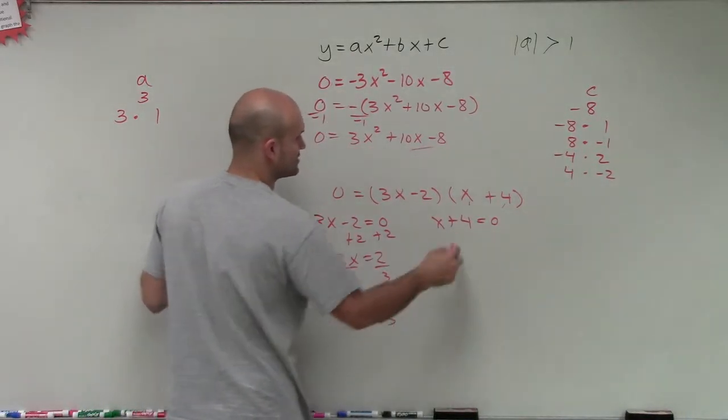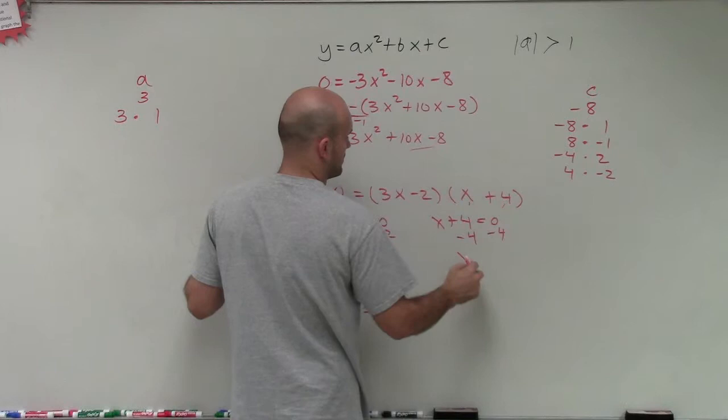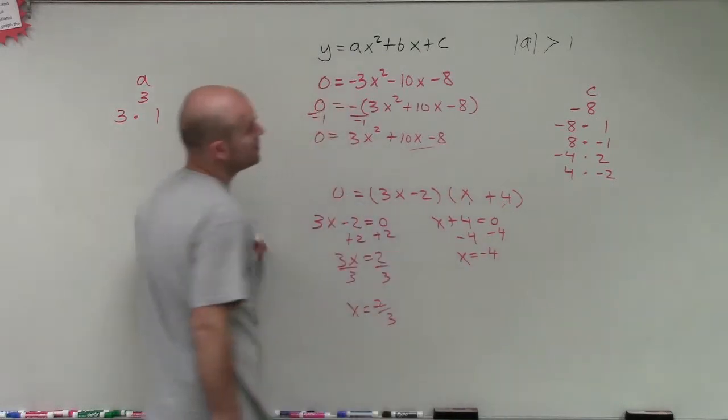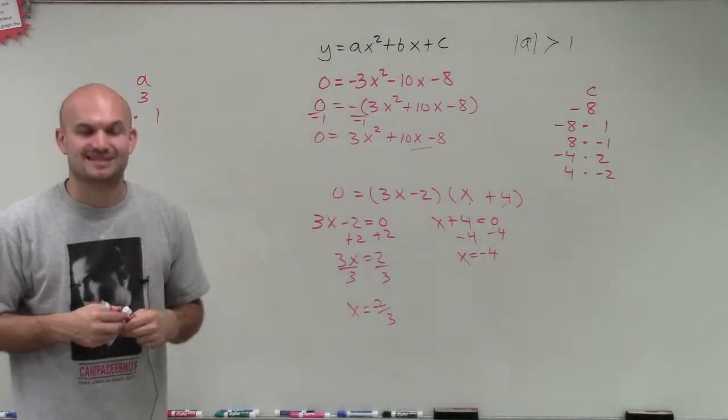So x equals 2 thirds and I subtract 4. x equals negative 4. So there you go, ladies and gentlemen. That is how you solve by factoring. Thanks.